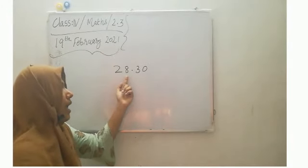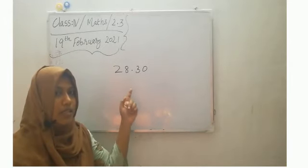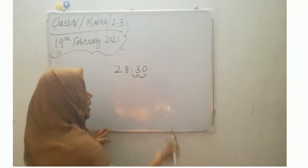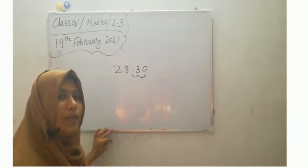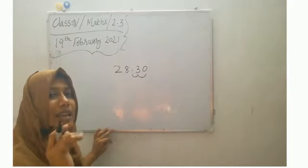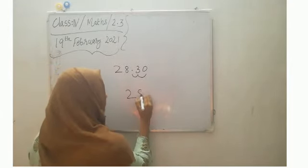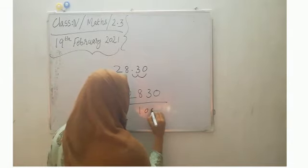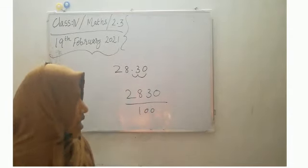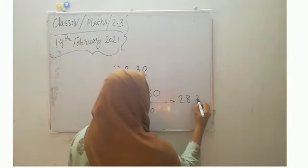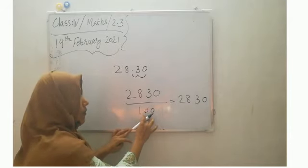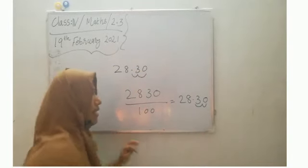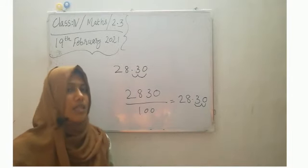So here we have twenty-eight point three zero. Count after decimal — we have one, two places. Two places means the denominator should be 100. So write the number as given: two thousand eight hundred and thirty, and make the denominator 100. And to convert back to decimal, write the number, then count — we have two zeros, so from the right side, one, two — put the decimal here. So conversion is so simple.